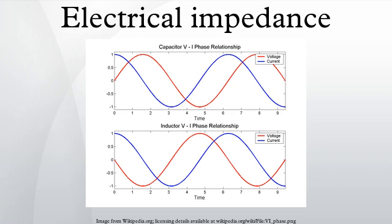Electrical impedance is the measure of the opposition that a circuit presents to a current when a voltage is applied. In quantitative terms, it is the complex ratio of the voltage to the current in an alternating current circuit. Impedance extends the concept of resistance to AC circuits, and possesses both magnitude and phase, unlike resistance, which is only magnitude.